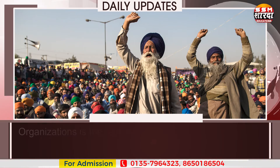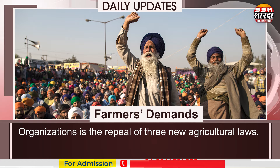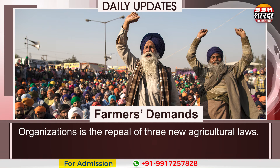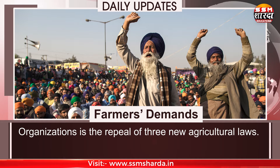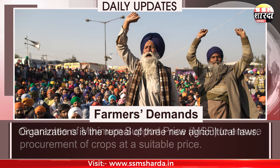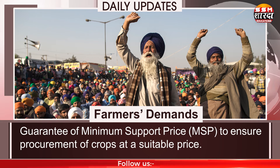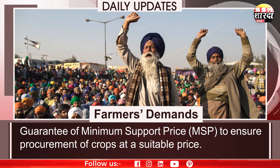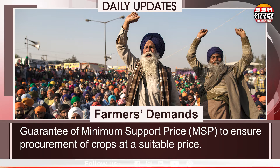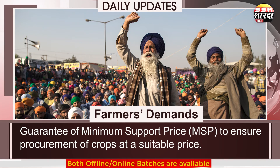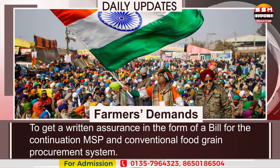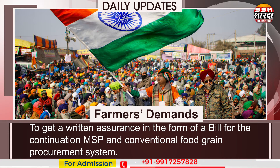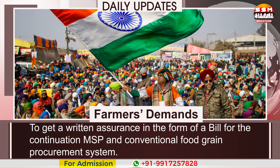Now we'll have a look at farmers' demands. The first and foremost demand of the protesting farmers' organizations is the repeal of the three new agricultural laws. The second demand is the guarantee of minimum support price to ensure procurement of crops at a suitable price. The farmers are also demanding a written assurance in the form of a bill for the continuation of MSP and the conventional food grain procurement system.